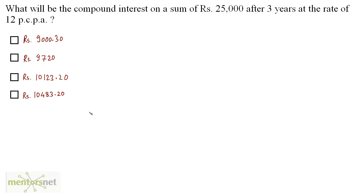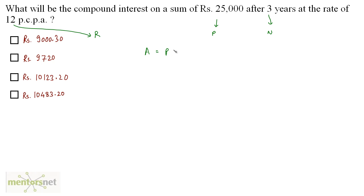What will be the compound interest on a sum of Rs. 25,000 after 3 years at the rate of 12% per annum? The principal is 25,000, N = 3 years, rate = 12%. The formula for amount is A = P × (1 + R/100)^N.